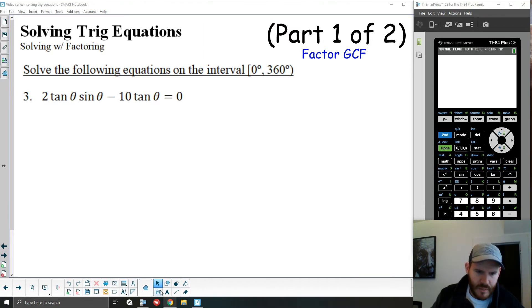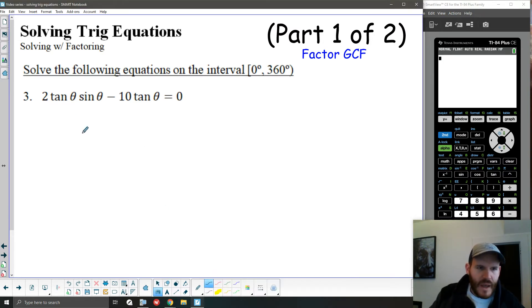We're going to jump right in with the first example here. I'm trying to solve when 2 tan theta times sine theta minus 10 tan theta is equal to 0 on the interval between 0 and 360 degrees. So I'm looking for a degree value solution. I'm just going to point out that this is really the product of three separate terms in this first expression, and then I'm combining that with another term.